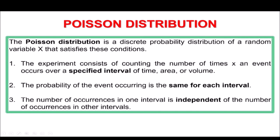There are three conditions that must be satisfied in order for us to say that a given experiment illustrates a Poisson process. The first condition is that the experiment consists of counting the number of times x an event occurs over a specified interval of time, area, or volume — so we're actually counting the number of occurrences for a given interval. It can be per day, per hour, or something like that.